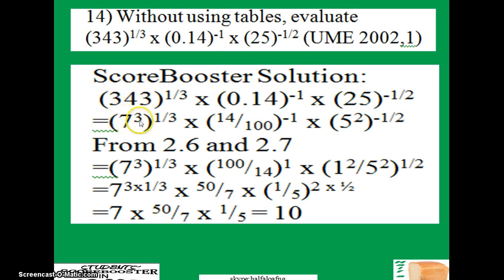So what we are going to do here is to find the factor of 343, and this gives us 7 raised to 3. Find the factor of 0.14, change this one from decimals to fractions, and I have 14 over 100. And I found the factor of 25, which is 5 raised to power 2. If you take a look at those rules, specifically rules 2.6 and 2.7...